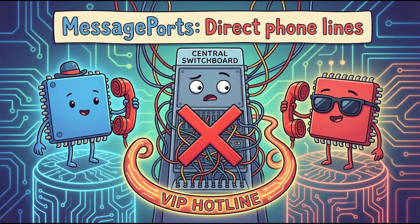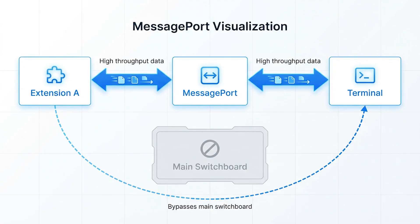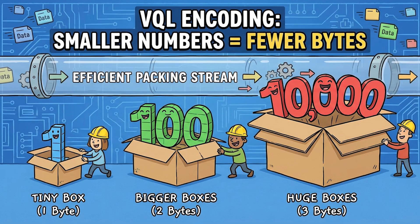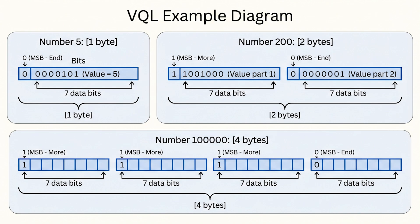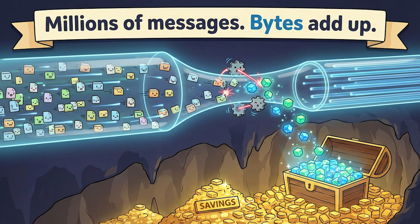There's one more IPC detail that's too cool not to mention: message ports. For certain high-throughput scenarios, VS Code uses the MessagePort API — it's like creating a direct phone line between two specific components, bypassing the normal switchboard. Extensions use this, the terminal uses this — anything that needs to pass a lot of data quickly gets its own message port. The transfer mechanism uses something called VQL — variable quantity length encoding for integers. Instead of always using 4 bytes for a number, small numbers use 1 byte, bigger numbers use more. This sounds trivial, but when you're passing millions of messages, shaving a few bytes each time adds up.